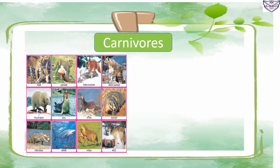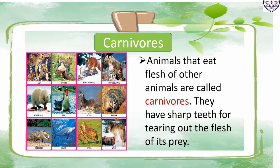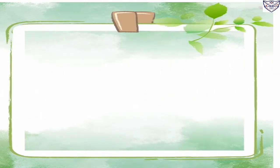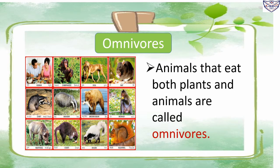Carnivores: animals that eat the flesh of other animals are called carnivores. They have sharp teeth for tearing up the flesh of their prey. For example, lion, tiger, and snake. Omnivores: animals that eat both plants and animals are called omnivores. For example, bear and human beings.